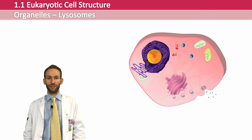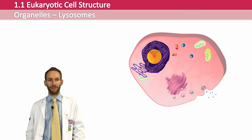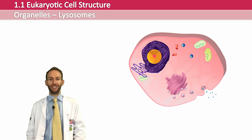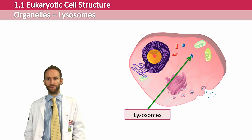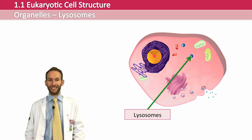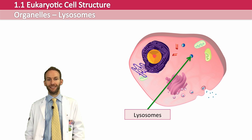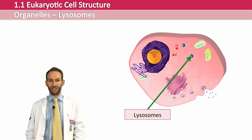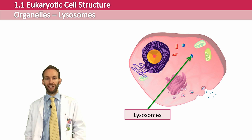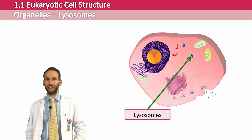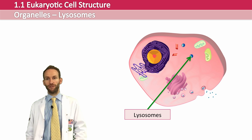Lysosomes are dark spherical organelles found inside the cytoplasm. They contain hydrolytic enzymes from vesicles formed by the Golgi apparatus. Lysosomes are used for breaking down substances the cell has taken in during phagocytosis, or in some cells they can fuse with the cell membrane and release enzymes out of the cell via exocytosis. In plant cells, the vacuole can carry out many of these lysosomal functions.